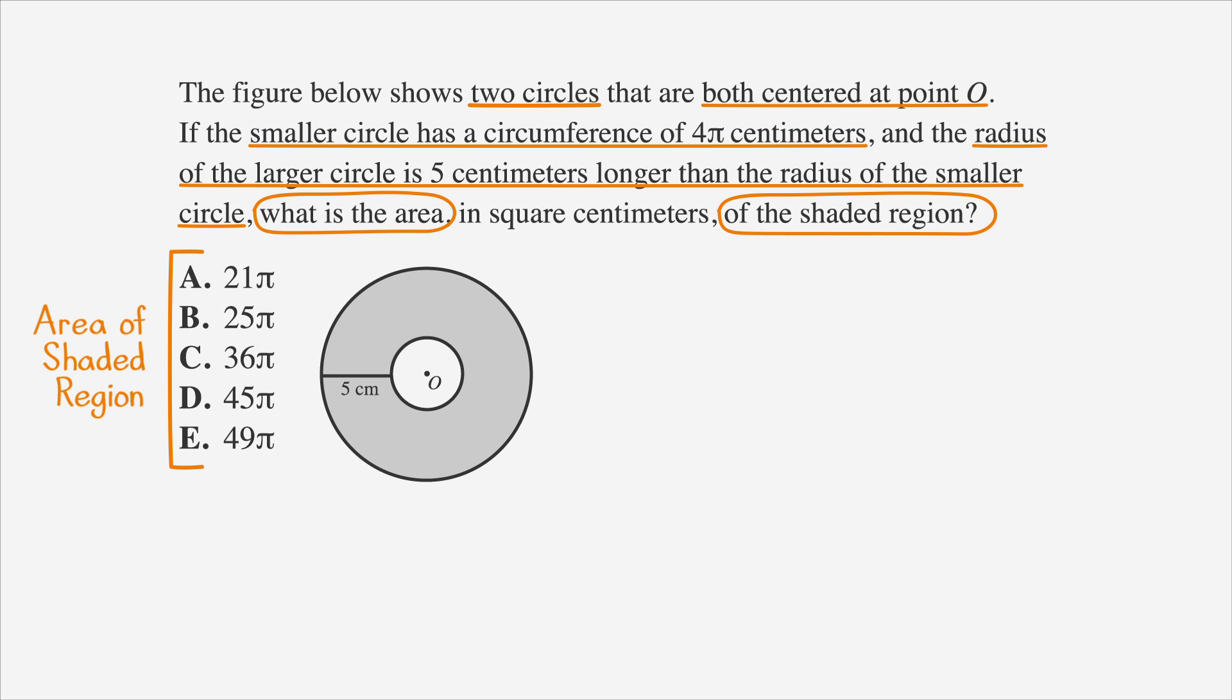Now let's see if we can work with the things we know. The smaller circle has a circumference of 4 pi centimeters. The circumference of a circle is 2 pi r. If the circumference of the smaller circle is 4 pi, then 4 pi equals 2 pi r, which means the radius of the smaller circle equals 2. The radius of the larger circle is 5 centimeters longer than the radius of the smaller circle. So the radius of the larger circle is 5 plus 2, which equals 7.